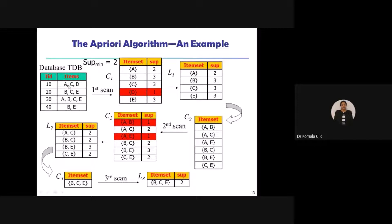How do I generate two elements? I come back to the database and derive pairs. First: A with B. Then A with C. Then A with E. A is done. Next B: B with C, then B with E. Then C with E. These are all the maximum combinations. So the candidate 2 itemsets are: AB, AC, AE, BC, BE, and CE.